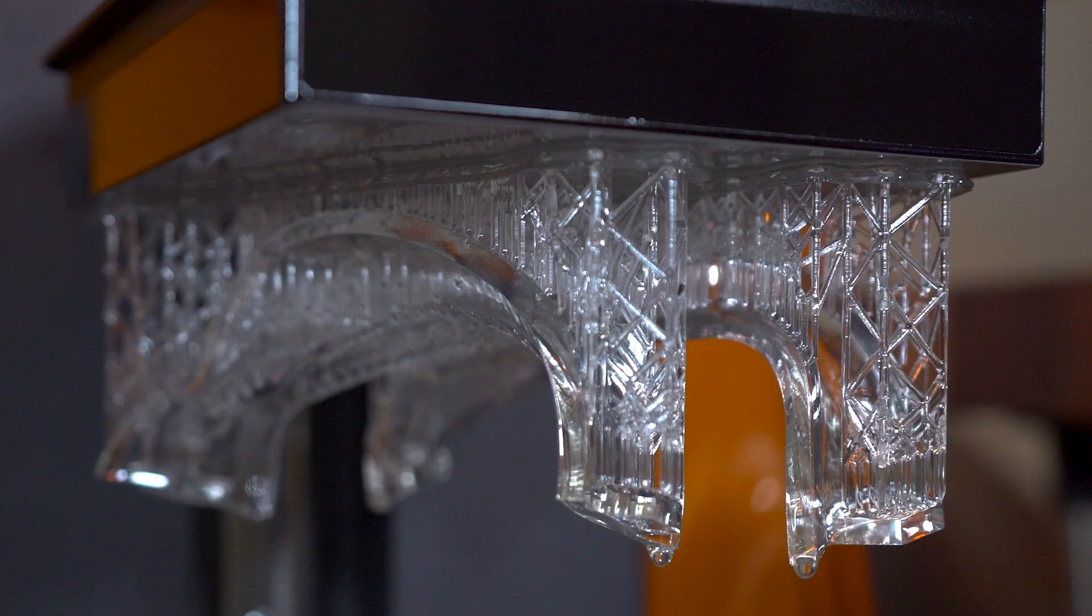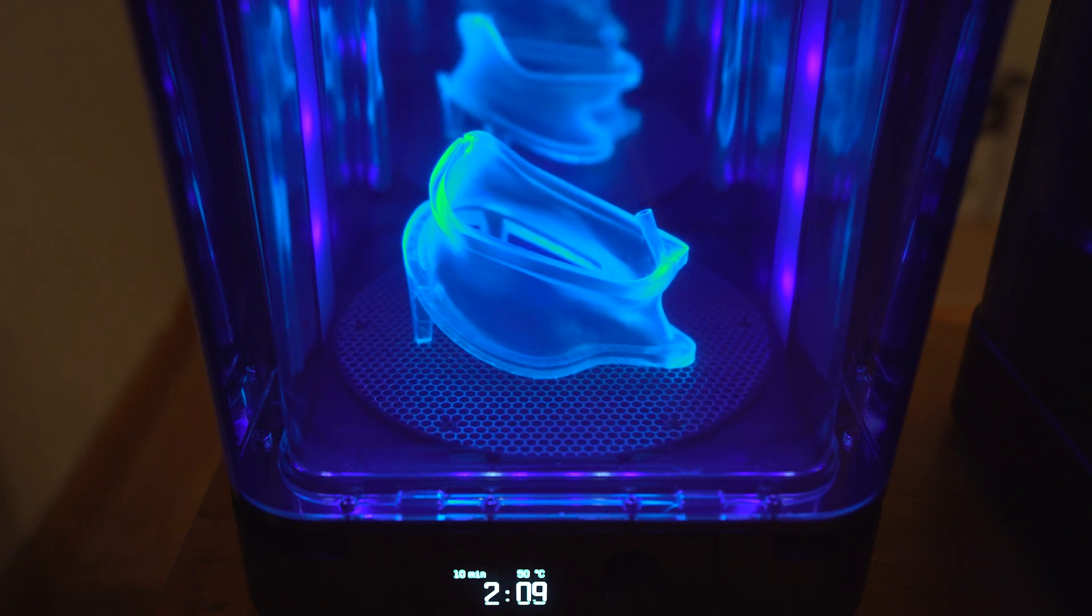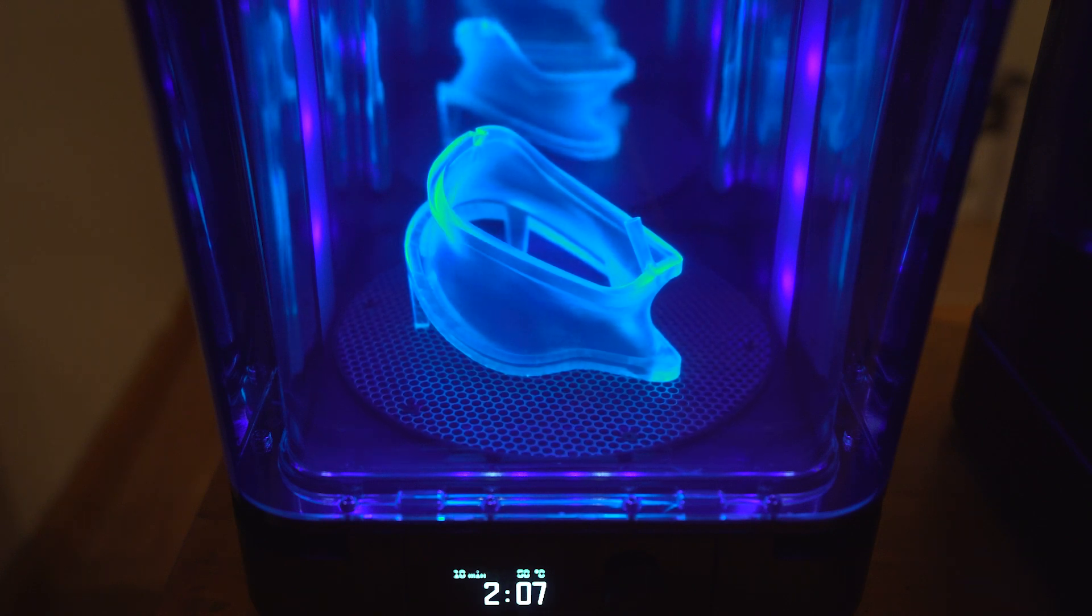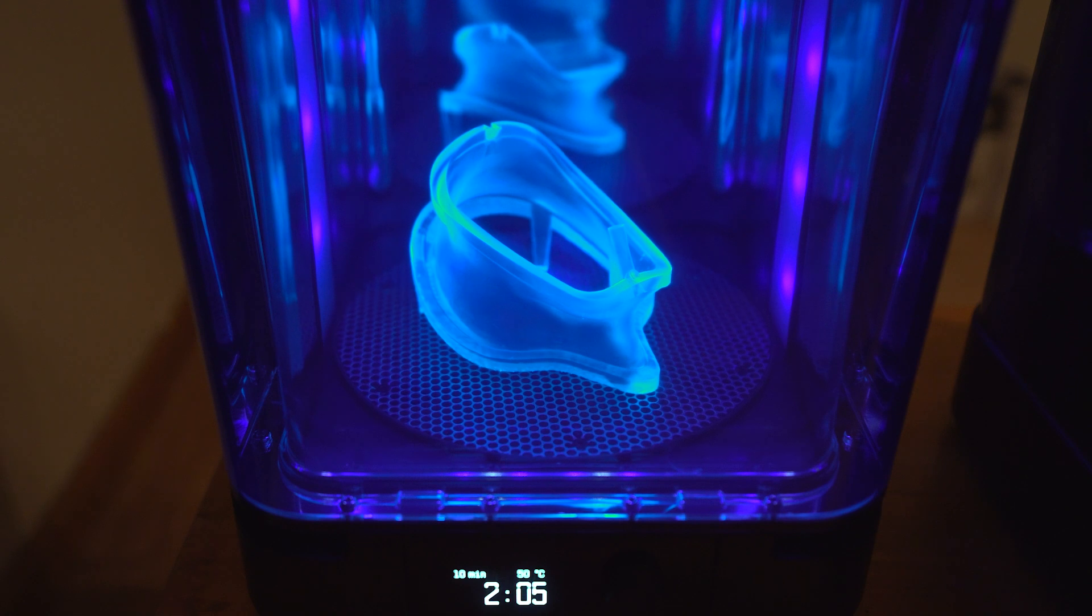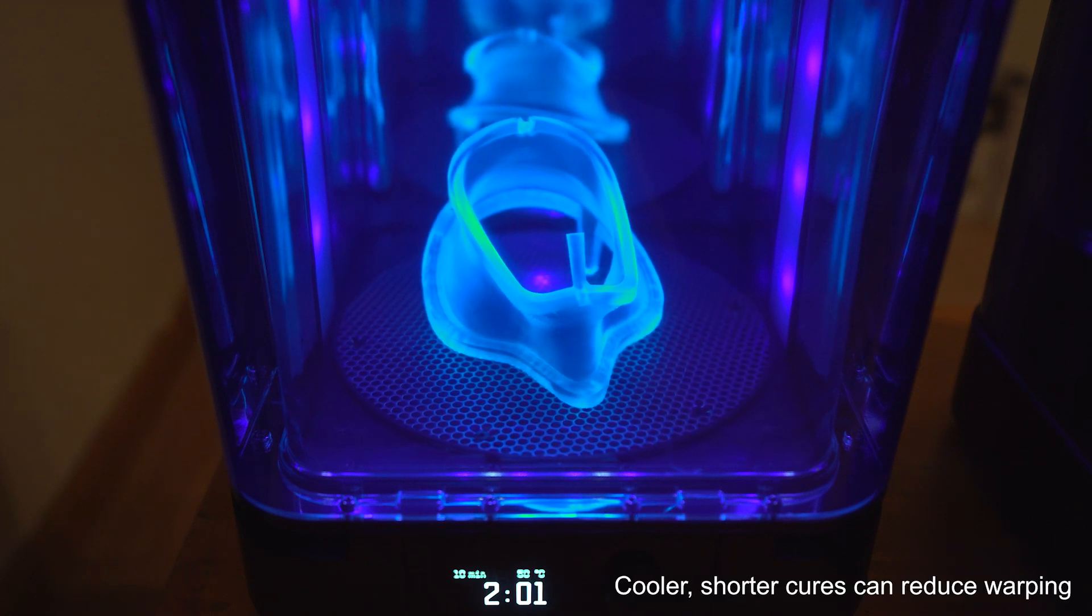First step was printing the mold. It has three parts: two outer halves and one centerpiece fit for Cinderella herself. I removed the support structure before curing this part. Leaving the support structure on can help reduce warping during the cure, but the shoe is a pretty rigid structure on its own.